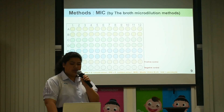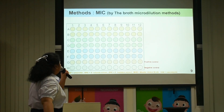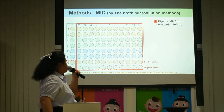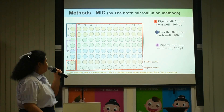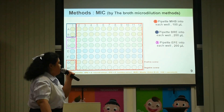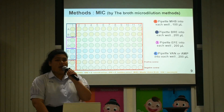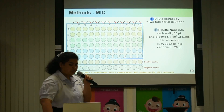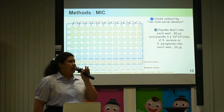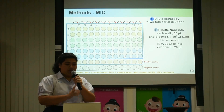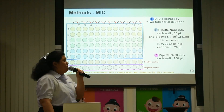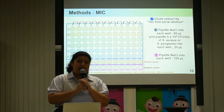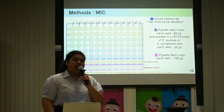This slide shows the method of MIC by the broth microdilution method. First, pipette MHB into each well, then pipette BRE into each well, and then EFE into each well. Pipette vancomycin or ampicillin into each well as controls. Dilute extract by two-fold serial dilutions. Pipette 80 µL of sodium chloride and bacteria into each well, and the last step is to pipette 100 µL of sodium chloride into each well, then incubate at 37 degrees Celsius for 18 to 24 hours.